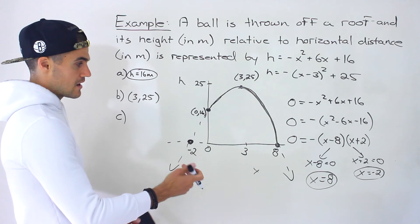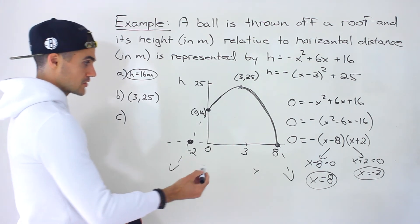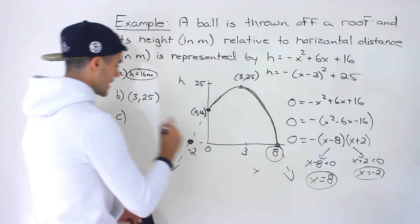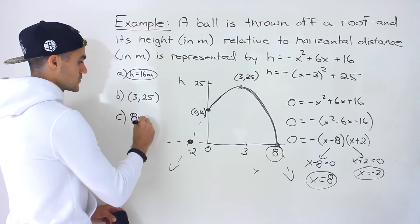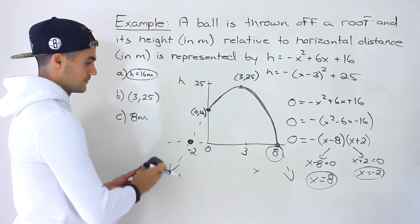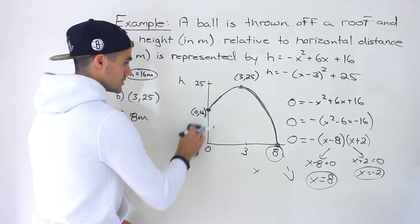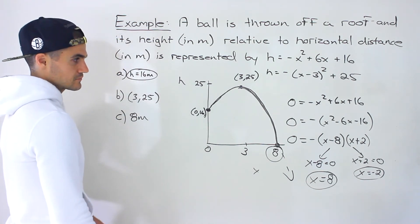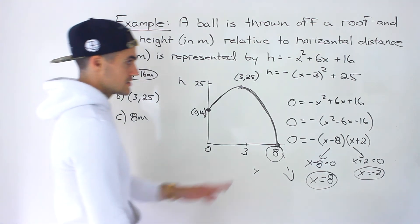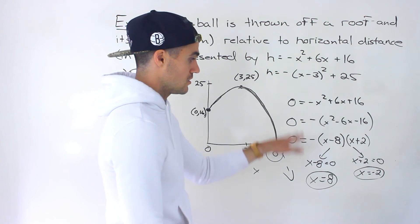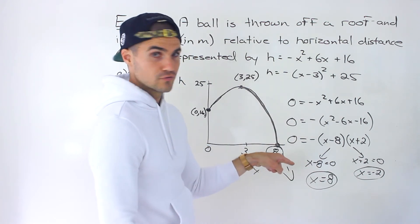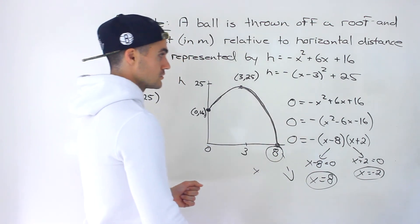So from here, we can tell that, what's the answer to part c? Well, 8 meters. At a horizontal distance of 8 meters, that's when the ball hits the ground. And we could just ignore this portion right there. So that's one way to go about it. So you make the standard form equal to 0, and then you factor it, and then you get your solutions.